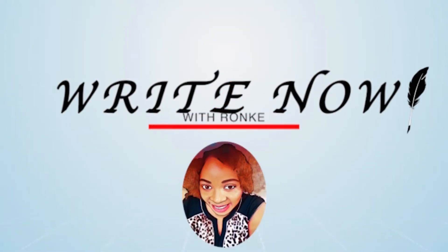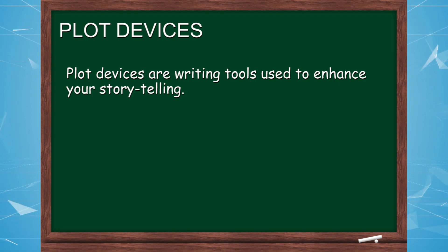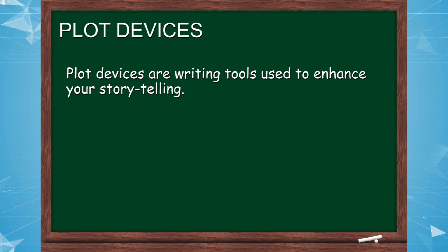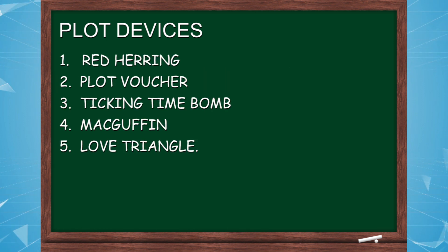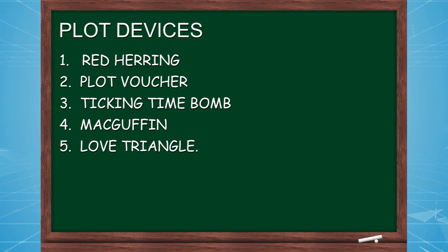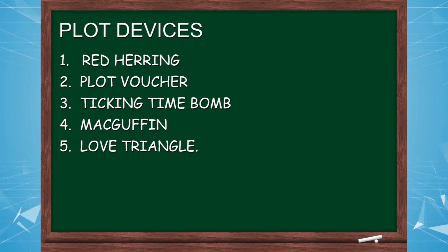So we're still on plot devices, and we understand that plot devices are writing tools used to enhance your storytelling. So far we've discussed five: Red Herring, Plot Voucher, Ticking Time Bomb, McGuffin, and Love Triangle.